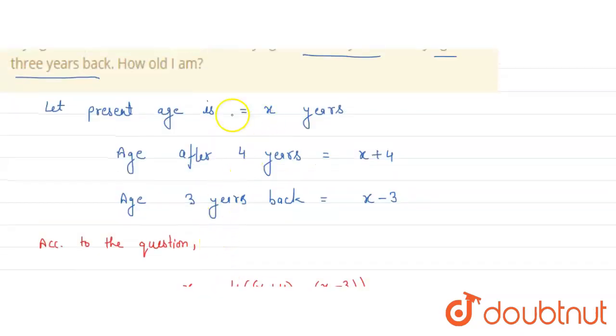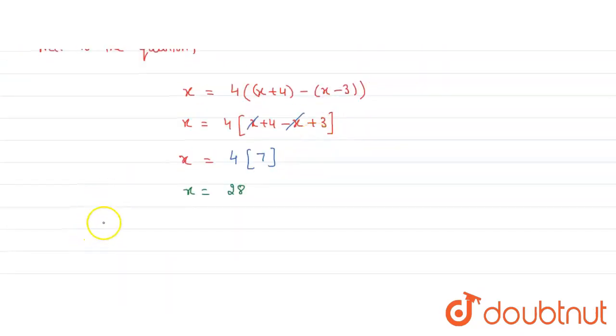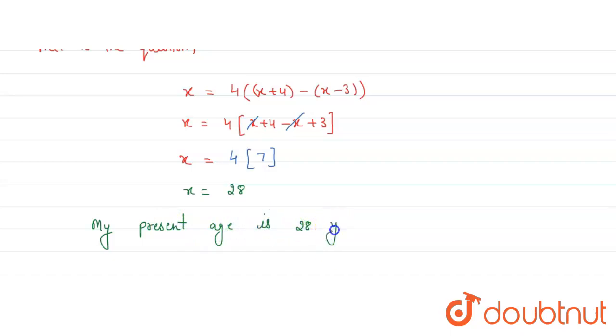So my present age is x years, so I can say my present age is 28 years old.